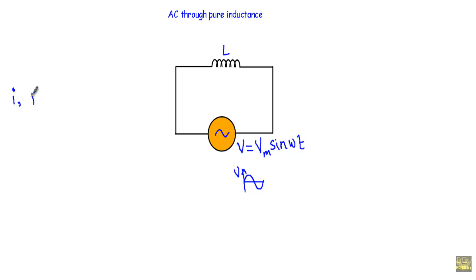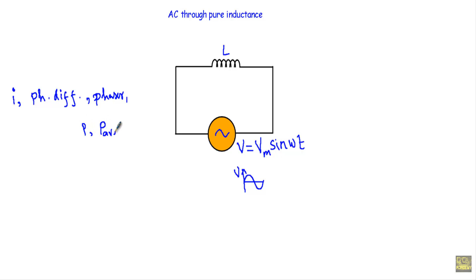In the circuit, I will show you the equation of alternating current I. After that I will show you the phase difference between voltage and current. After that I will draw the phasor diagram. Lastly, I will show you the equation of instantaneous power and average power. In the first part I will talk about alternating current I and the phase difference, and in the next video I will show you the phasor diagram and the average and instantaneous power absorbed by this inductance.